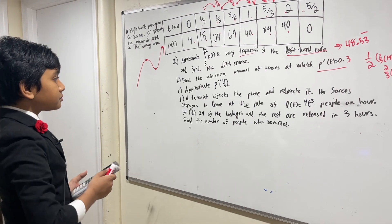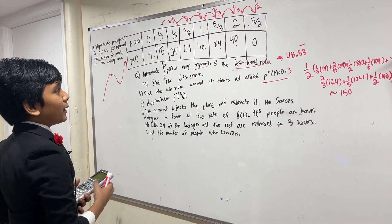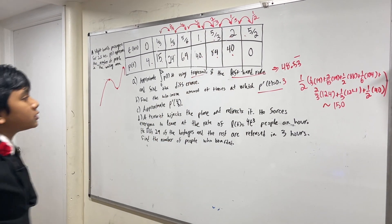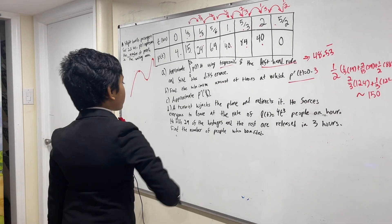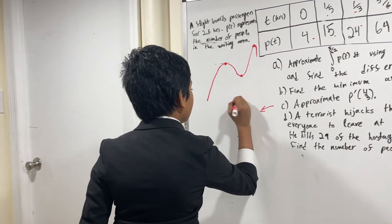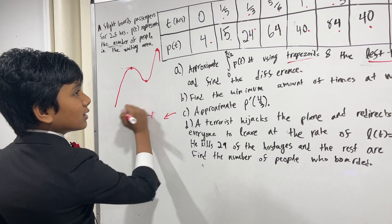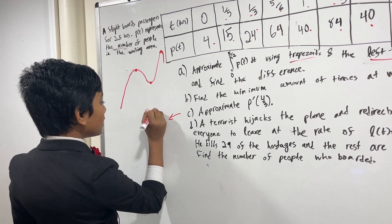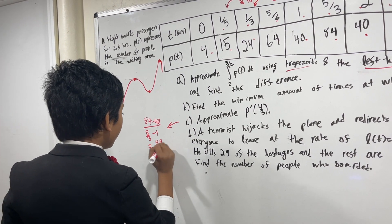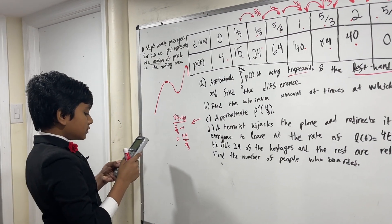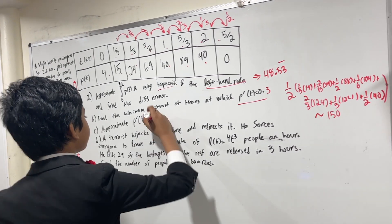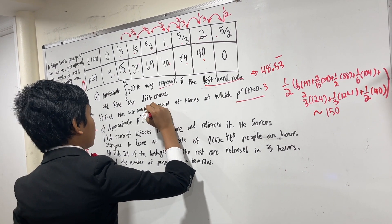Okay. Approximate p prime of 4/3. Well, 4/3 is in between 1 (which is 3/3) and 5/3. So p prime of 4/3 can be approximated as (y2 minus y1) over (x2 minus x1): that is (84 minus 40) over (5/3 minus 1), so that is equal to 44 over 2/3, or 44 times 3/2, which is 66. So p prime of 4/3 is approximately 66.